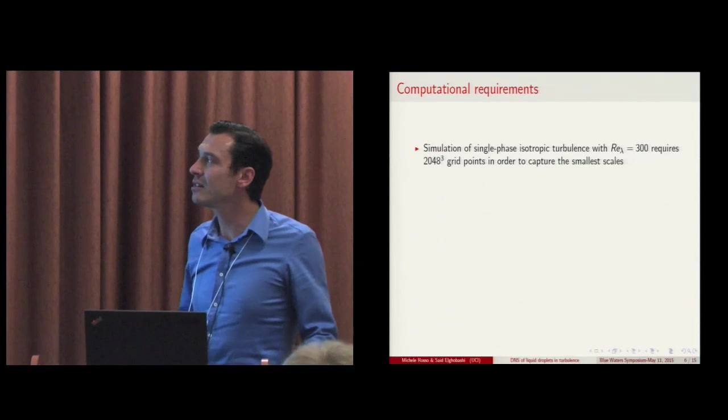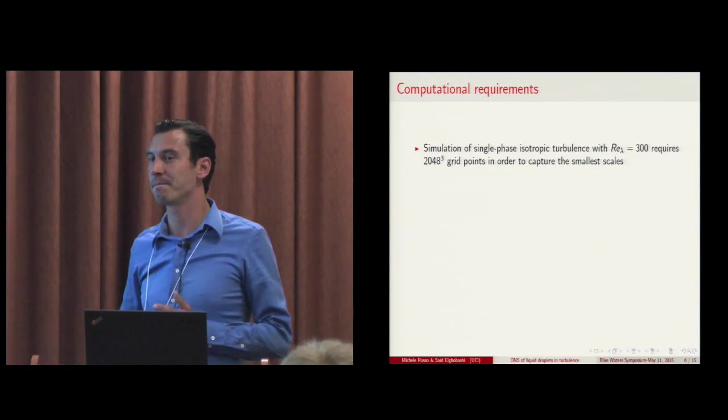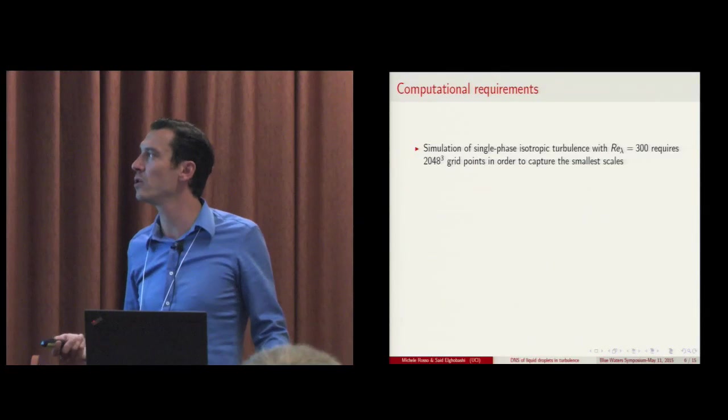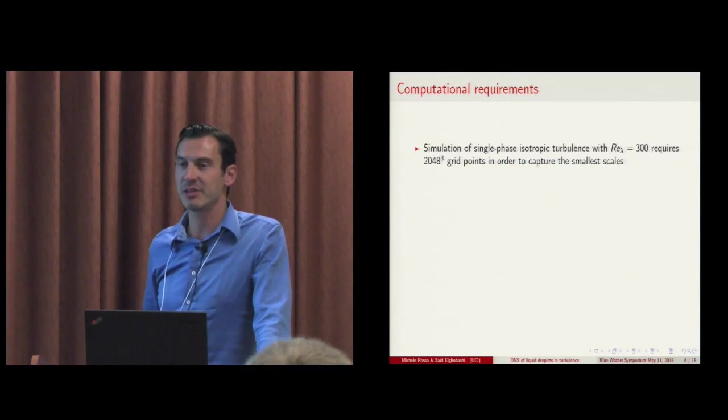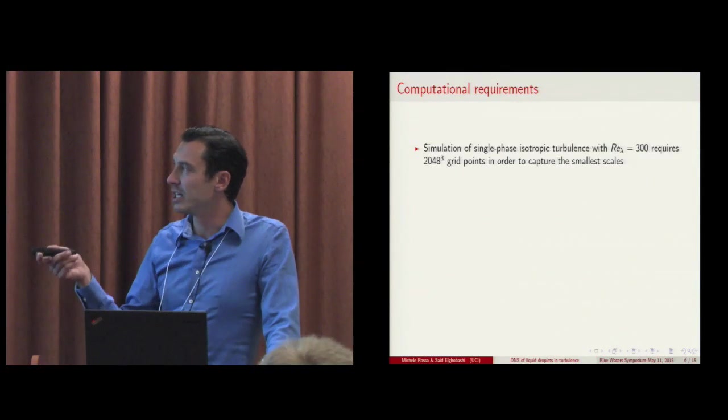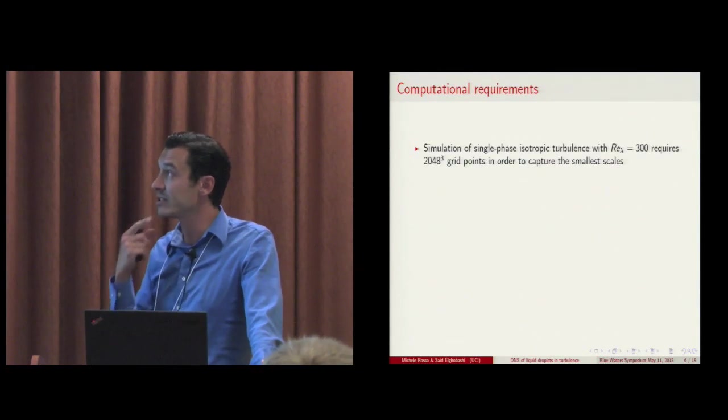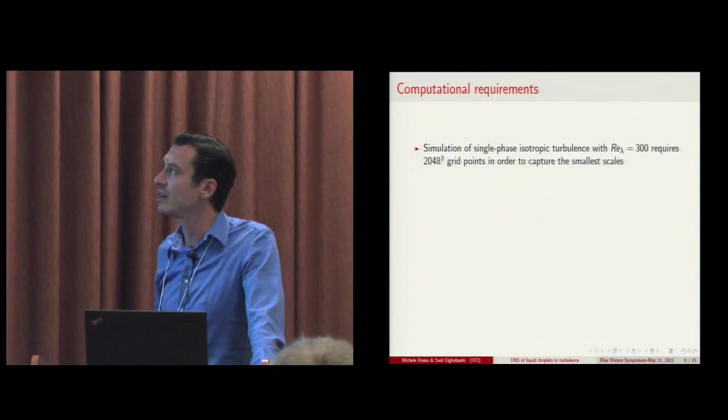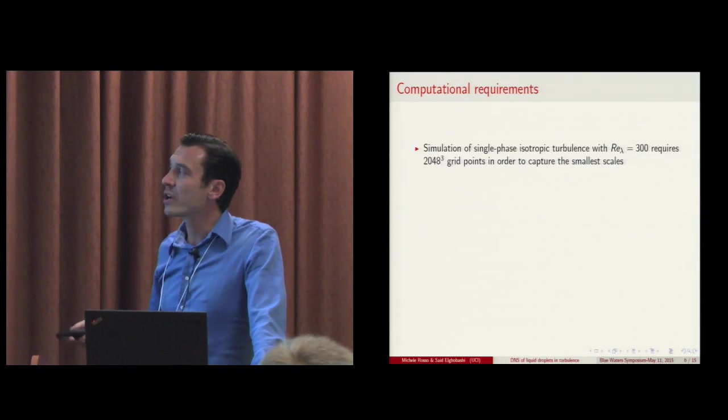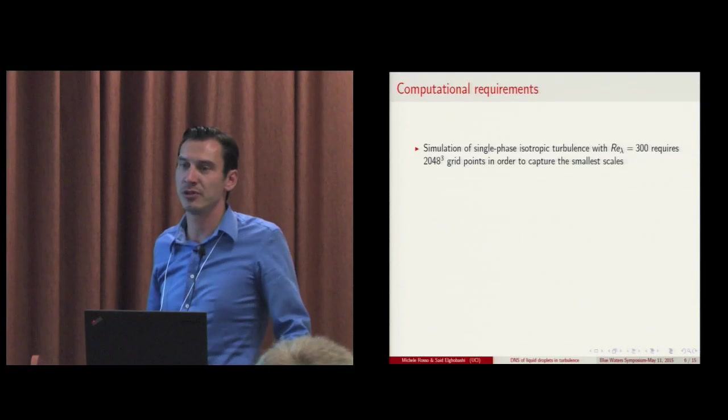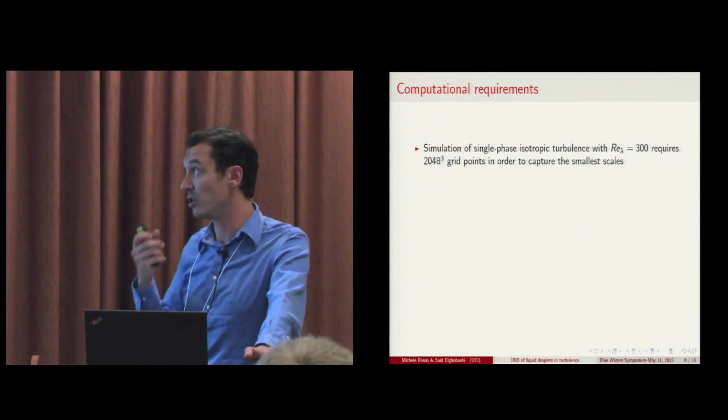So in general, DNS, both for single phase or multiphase flow, is very demanding. It's a very demanding kind of simulation. For example, consider that to simulate a single phase isotropic turbulence with Reynolds lambda around 300, we require a grid of 2048 cubed in order to be able to resolve the smallest scale.